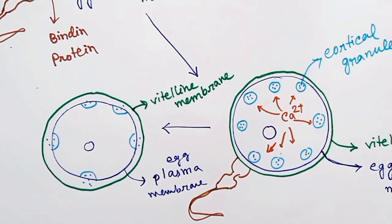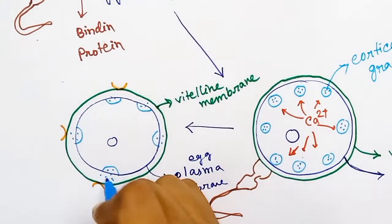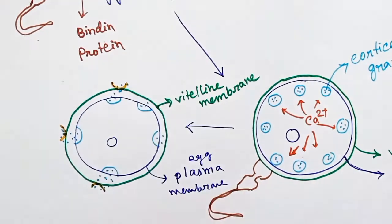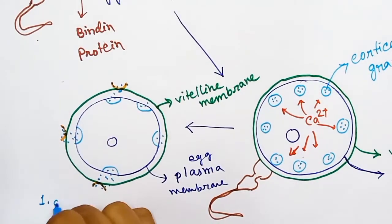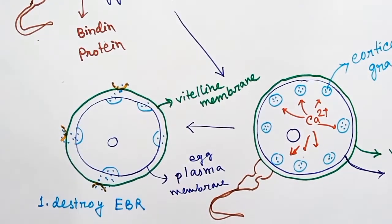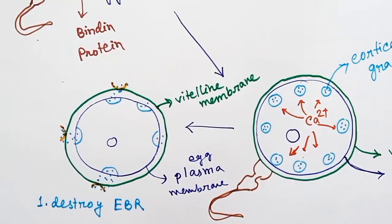The granules are released in the perivitaline space. These granules digest the EBR receptors on the vitaline membrane. These receptors are destroyed so that the sperm binding protein cannot interact with these receptors to get inside the ovum.